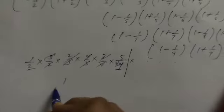First term and last term will be 1/2. Last term will be 10/9. The answer will be 5/9. 5/9 will be the answer of this.